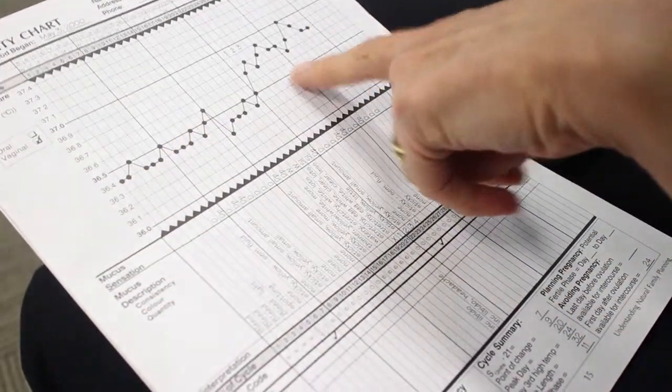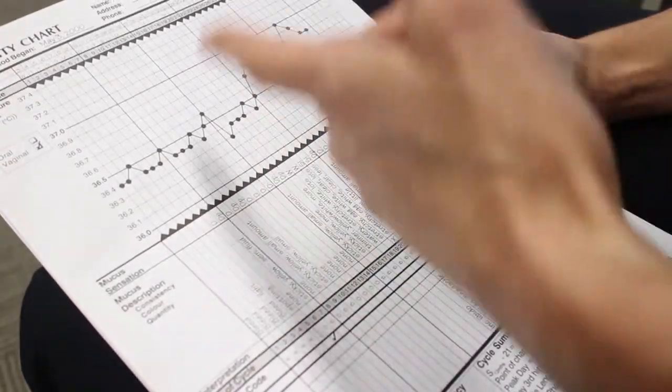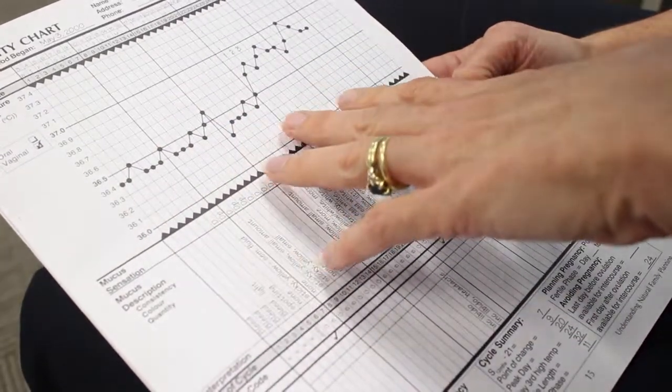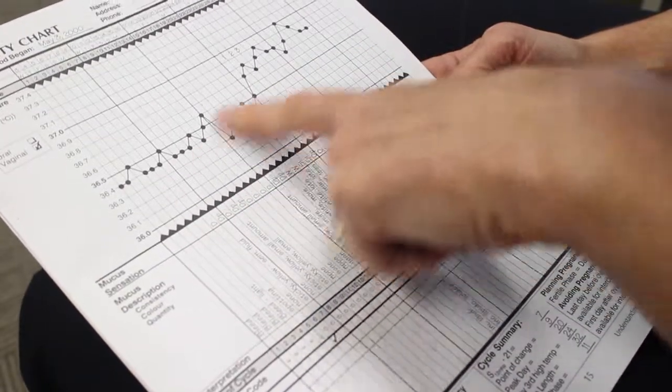The temperature rise confirms that ovulation has occurred, but there's certain criteria that need to be met to see the rise. That's what you learn when you actually learn the method correctly. It identifies or confirms that ovulation has occurred.